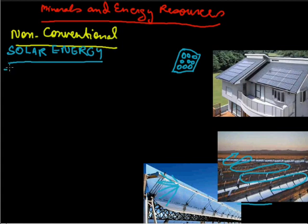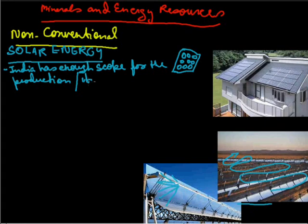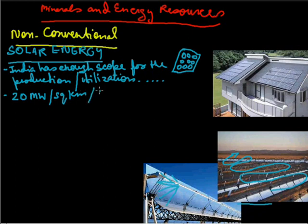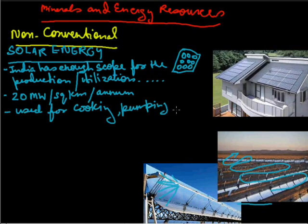So this is how two types of electricity are produced through it. Being a tropical country, India has enough scope for the production and utilization of solar energy. The maximum part of India is hot region. At present, about 20 megawatt per square kilometer per annum energy can be produced from solar energy in India. Solar energy can be used for cooking, pumping, heating water. Many houses people are using solar energy for their source of geyser in their home.